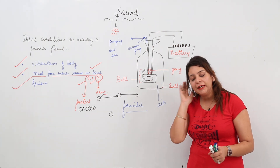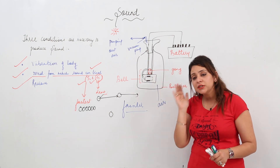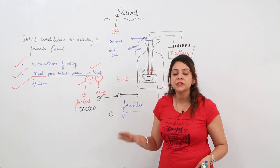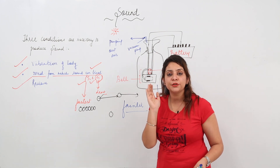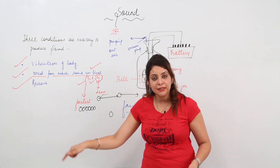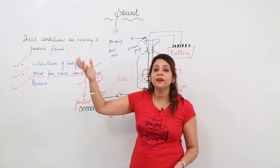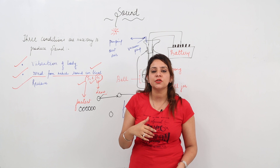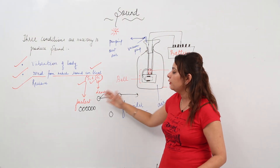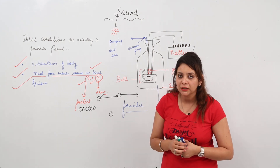For example, if a train is coming and you keep your ear on the railway track, which is made of iron, even without hearing a siren you can feel the vibrations of the train. This is because sound travels much faster through the iron track compared to its speed in air.